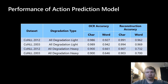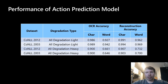Here you can see the performance of the action prediction model on different degradation levels in terms of character-level and word-level accuracy. Notice how even a slight drop in character-level accuracy leads to a much bigger drop in word-level accuracy, especially on heavy degradations. Our model, however, is able to restore the text and bring the character and word-level accuracies up on all datasets and all degradation levels.